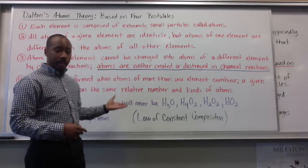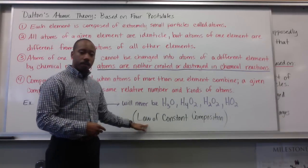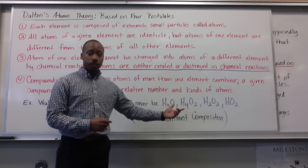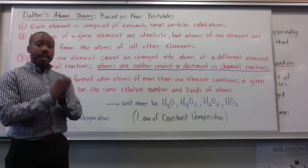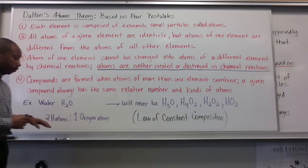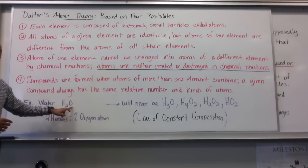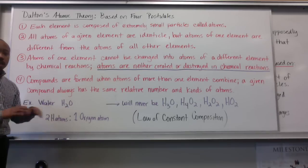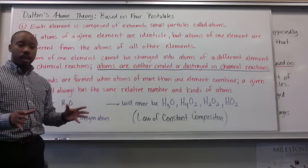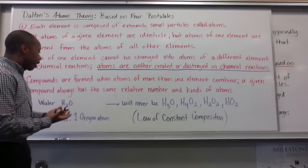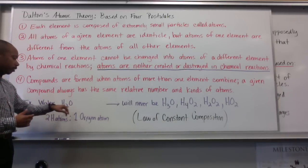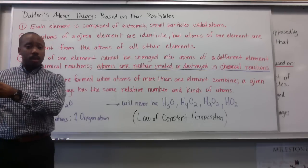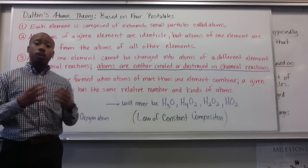This last statement brings about another law — the law of constant composition, also called the law of definite proportions. This means that any given compound will have its own specific formula, its own specific ratio of atoms. In this case, water is two hydrogen, one oxygen, and water's formula will not change. Now, when two elements, H and O, can combine to make different compounds, we get something called the law of multiple proportions.